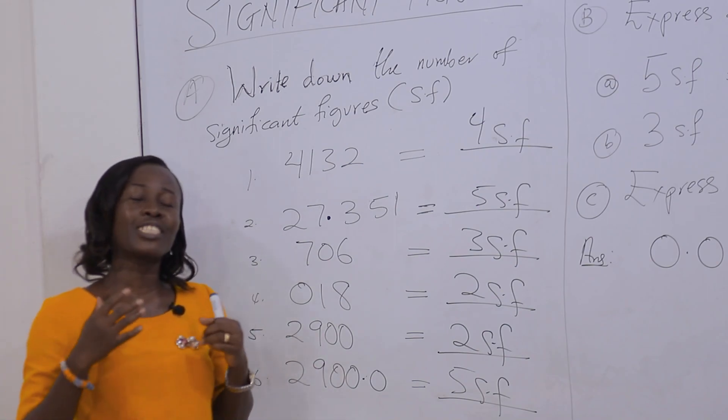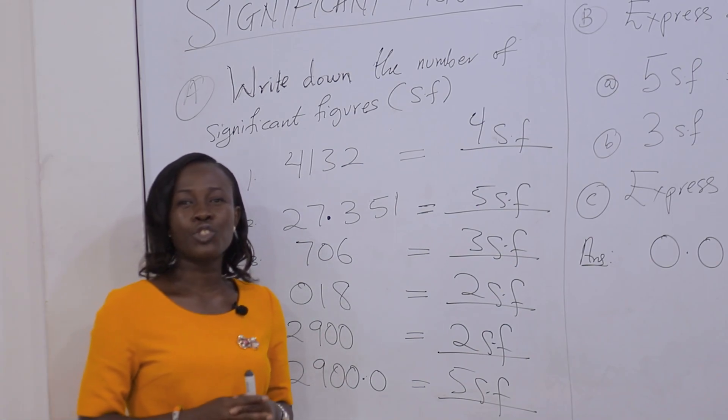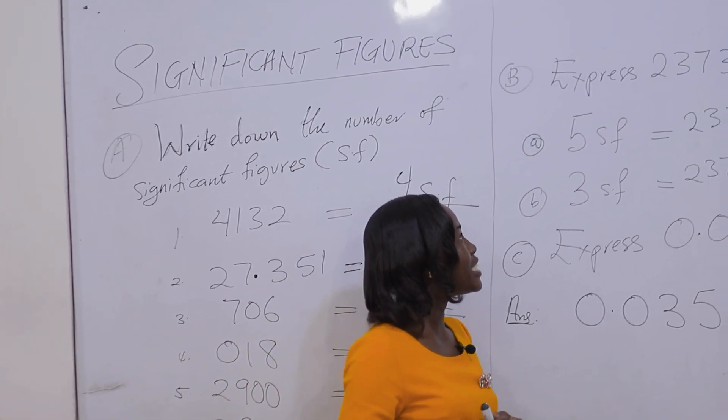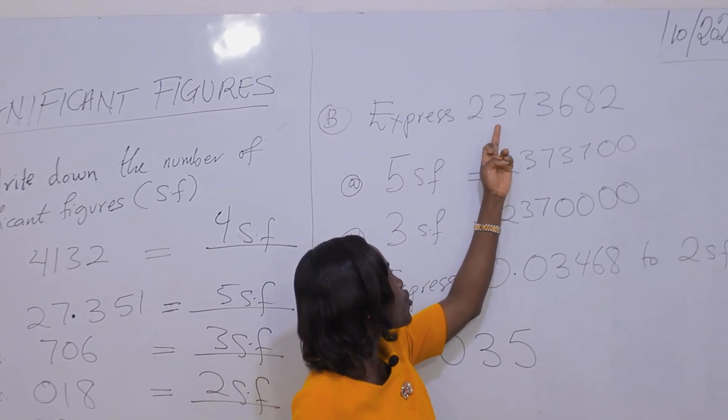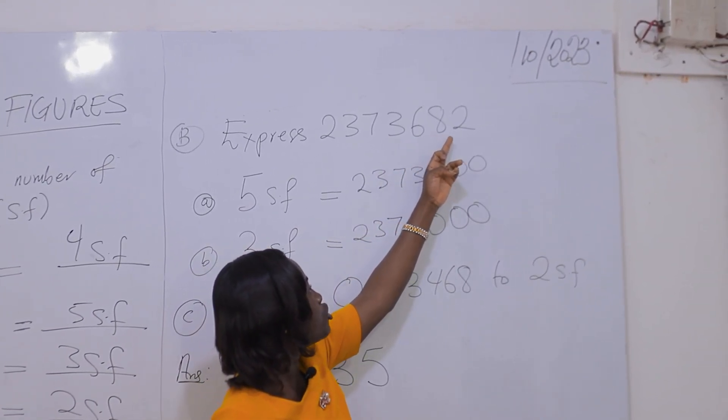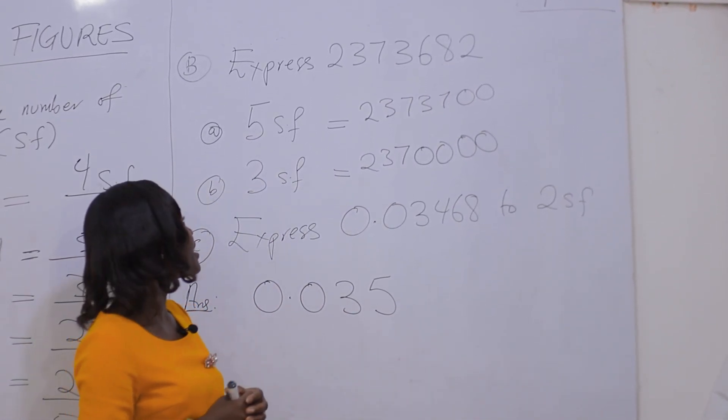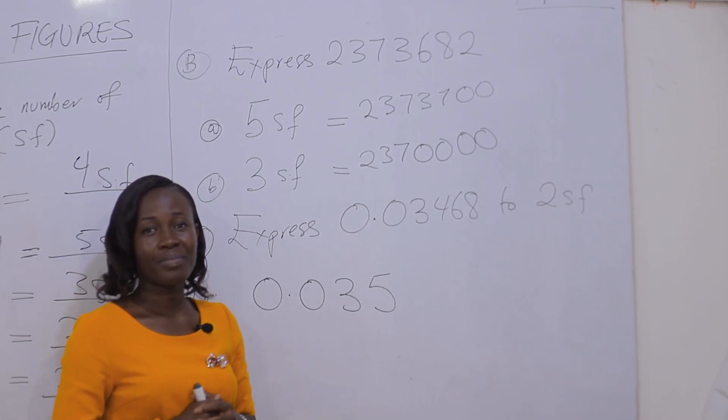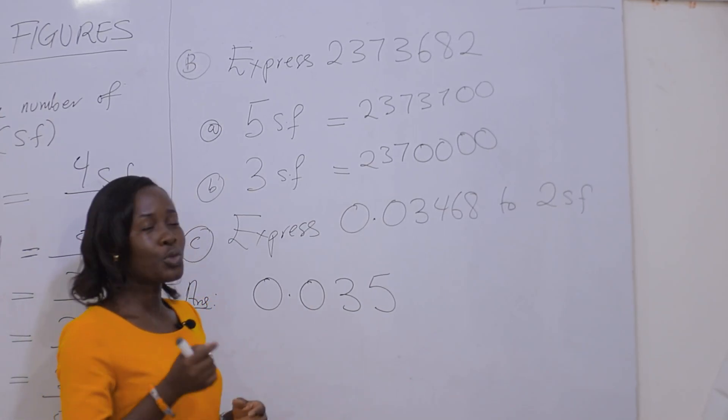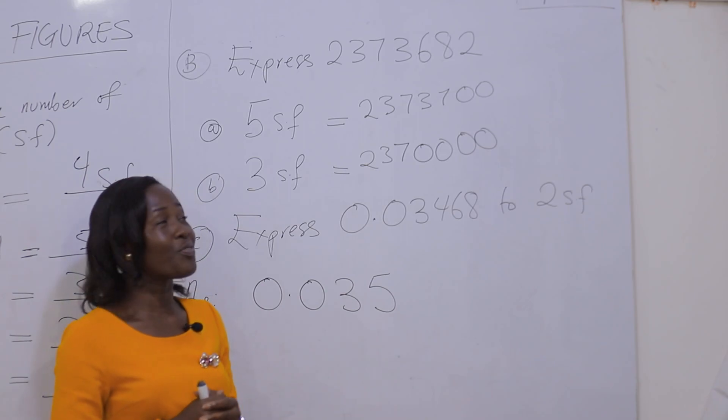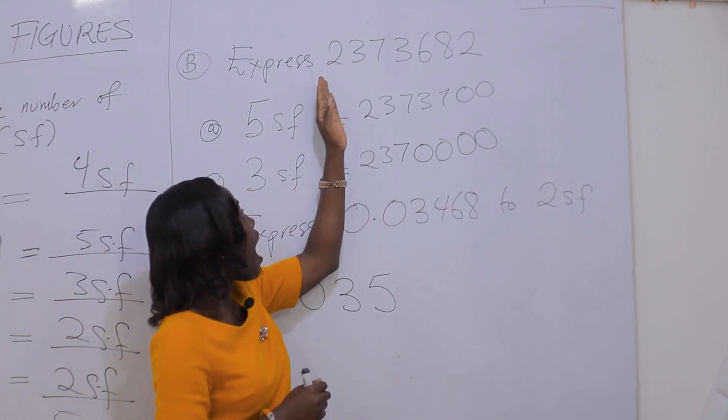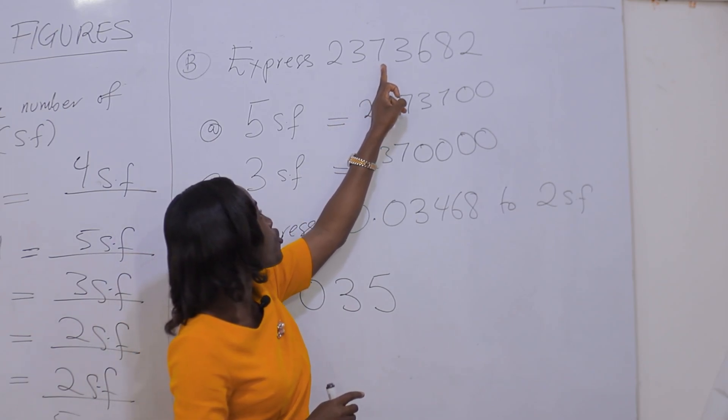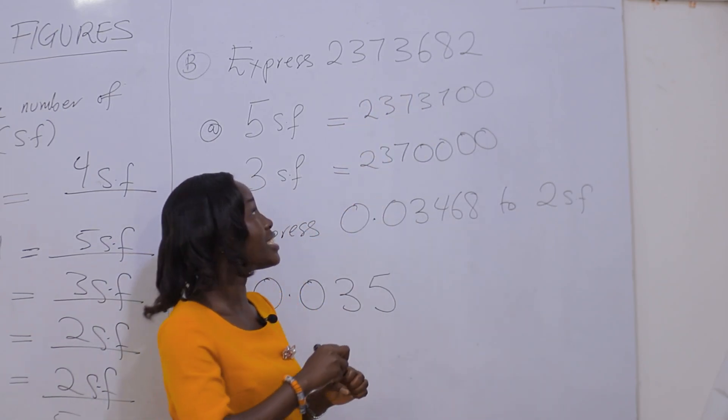How do we then express a given number to a stated number of significant figures? For our next example, we have 2373682 and we are expressing this number to 5 significant figures. Our first step is to determine the last significant figure. From the number, our first significant figure is 2. So 1, 2, 3, 4, 5 on the 6.